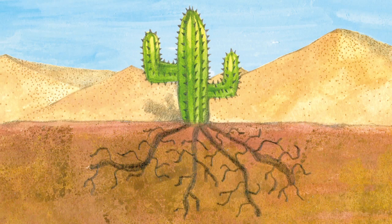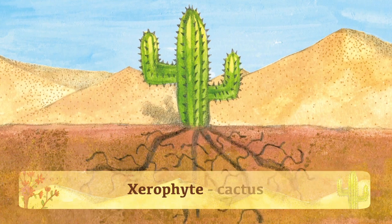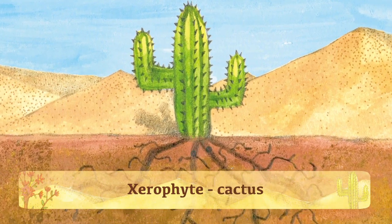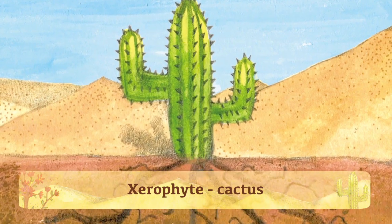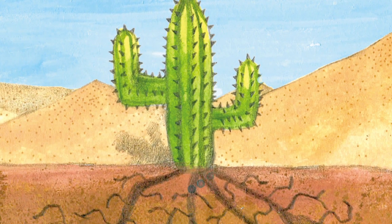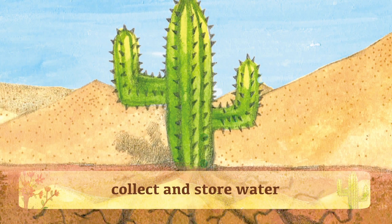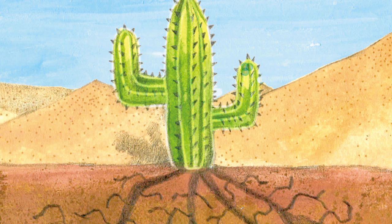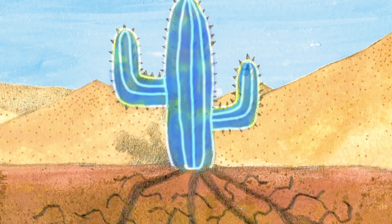One type of desert plant is the xerophyte. The cactus is an example of the xerophyte. These plants are very good at collecting water and storing it for long periods of time. A cactus has thick and fleshy stems that help store water efficiently and special root systems to collect water.